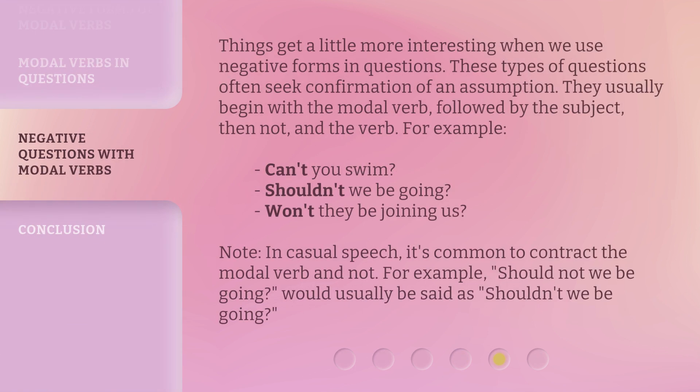Things get a little more interesting when we use negative forms in questions. These types of questions often seek confirmation of an assumption. They usually begin with the modal verb, followed by the subject, then 'not,' and the verb. For example: 'Can't you swim?' 'Shouldn't we be going?' 'Won't they be joining us?' Note that in casual speech, it's common to contract the modal verb and 'not.' For example, 'should not we be going?' would usually be said as 'shouldn't we be going?'